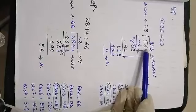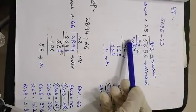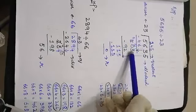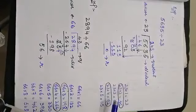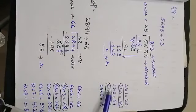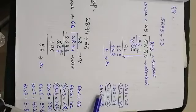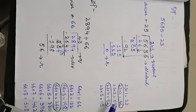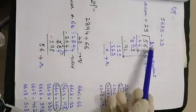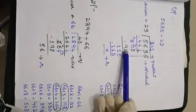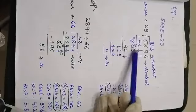Bring down the 3 here, so the value becomes 103. Now from the table: 23 threes are 69, 23 fours are 92, 23 fives are 115. The lesser value below 103 is 92, so 23 fours are 92. Then 3 minus 2 is 1, and since 0 is less than 9 we need to carry.